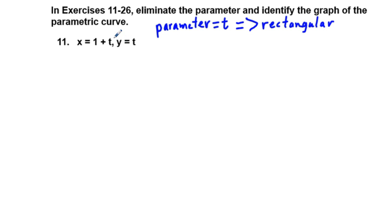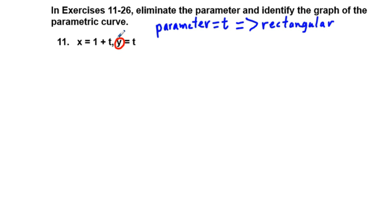The strategy here to eliminate the parameter is where we can replace. We can see right here in the right equation that y is equal to t. So therefore, we can take this y in the equation to the right and replace this t in the x equation.